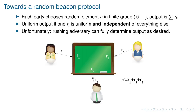To understand how publicly verifiable secret sharing comes into the picture, let's first see the problems with more elementary approaches. To establish a random output, each party could choose a random element in some finite group and output the sum of these elements. The output is uniform if at least one of the inputs is uniform and independent from the others. However, when the adversary is rushing, this is not possible, because the adversary will wait until the honest parties announce their inputs and then decide on the input of one corrupted party to completely fix the desired output.